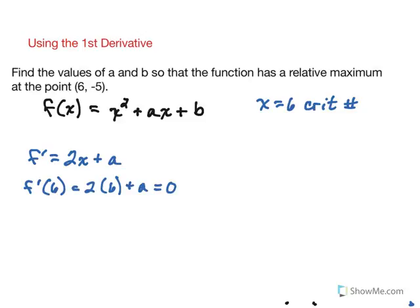Now this is a polynomial function, so there will not be any place that the derivative does not exist. So we get out of this that a equals negative 12. So there's one of the values right there that we need to know.